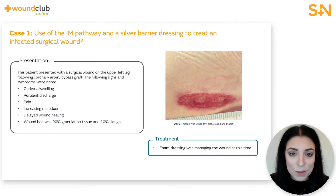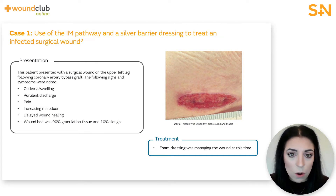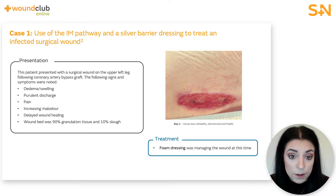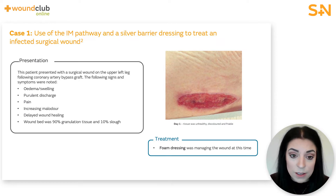Let's look at case study one. This 80-year-old patient presented with a surgical wound on the upper left leg following a coronary artery bypass graft. Notable medical history included type 2 diabetes and diabetic neuropathy. You can see the signs and symptoms associated with this wound on the first assessment. Exudate levels at this initial assessment were high and the patient was also experiencing distressing levels of pain. From the image on the screen you can see that the tissue was unhealthy, discoloured and friable.